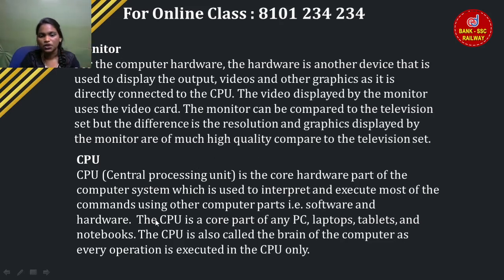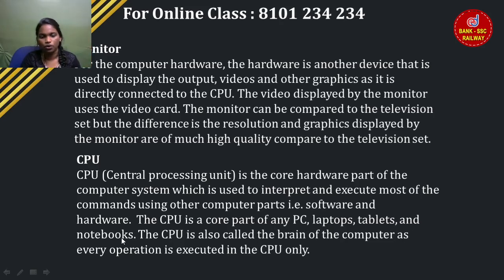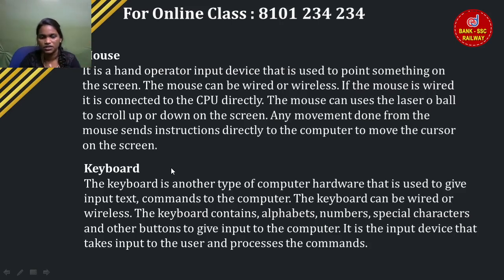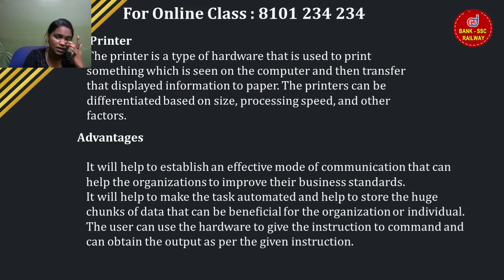The CPU is the central processing unit — the brain of the computer. It is hardware, covering the PC, laptop, tablet, and notebook. The mouse — if we move the mouse, we can use it; there is also a wireless option. The keyboard — we can type; there are alphabet keys, number keys, special characters, and other buttons. We can use shortcut keys. The printer — if the computer is connected to a printer and we print, it will print.